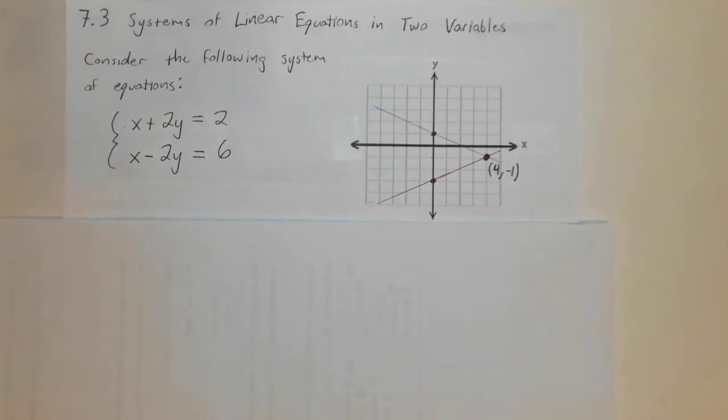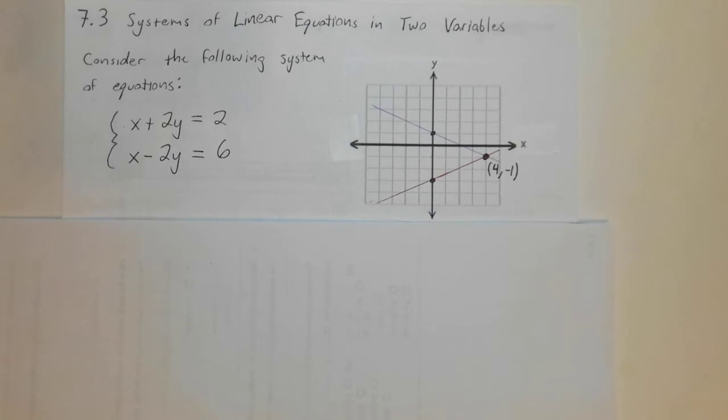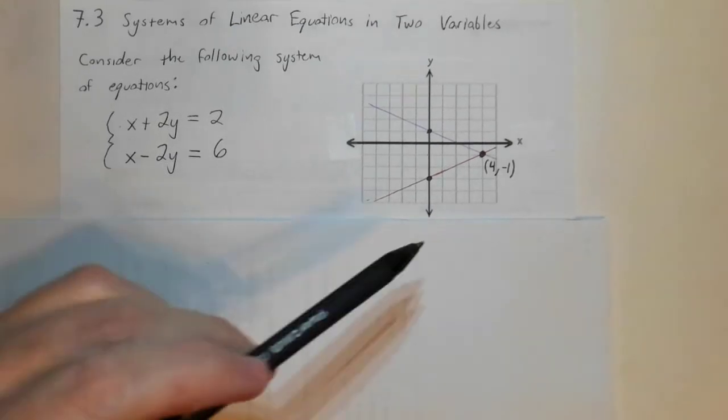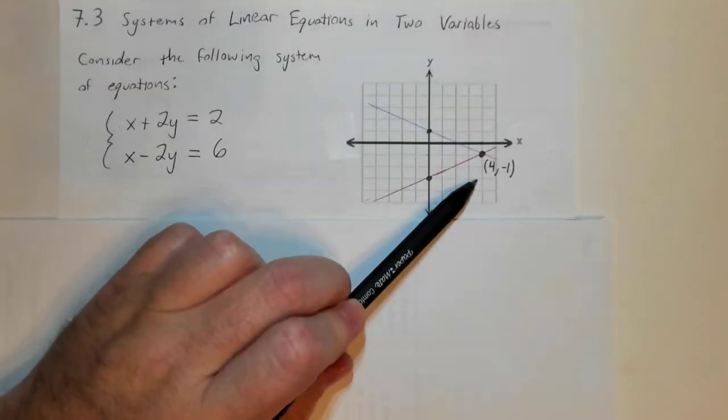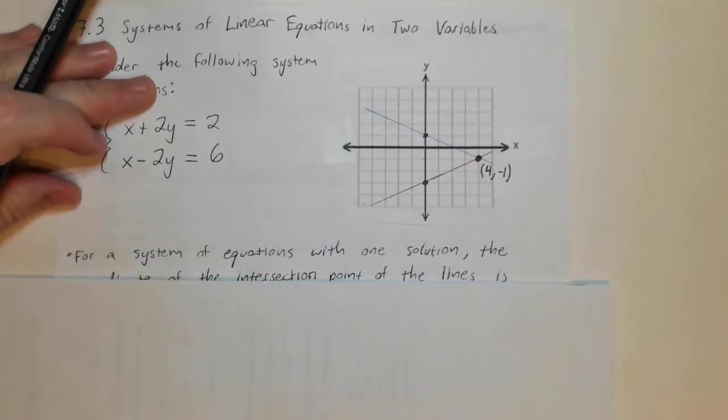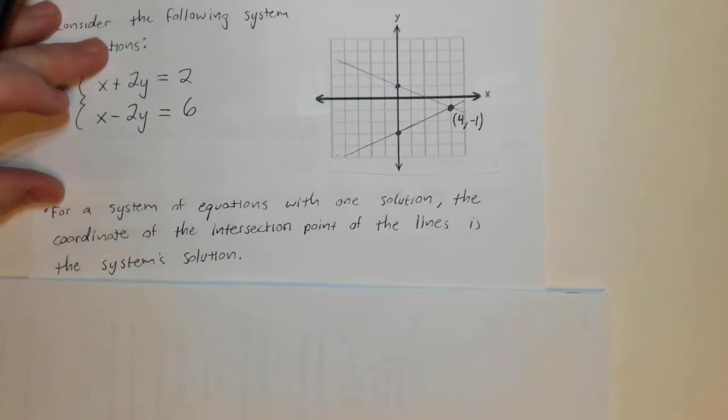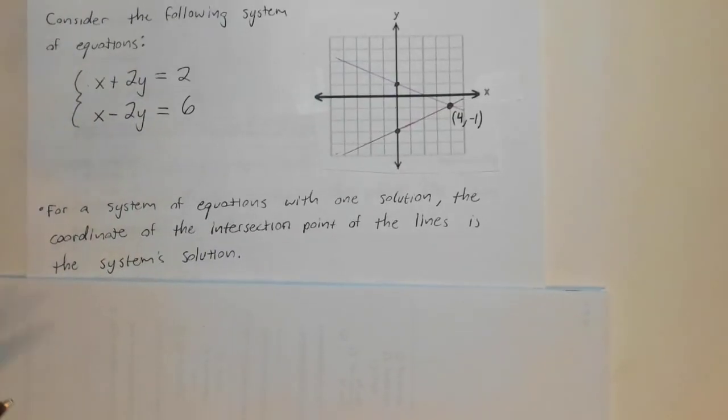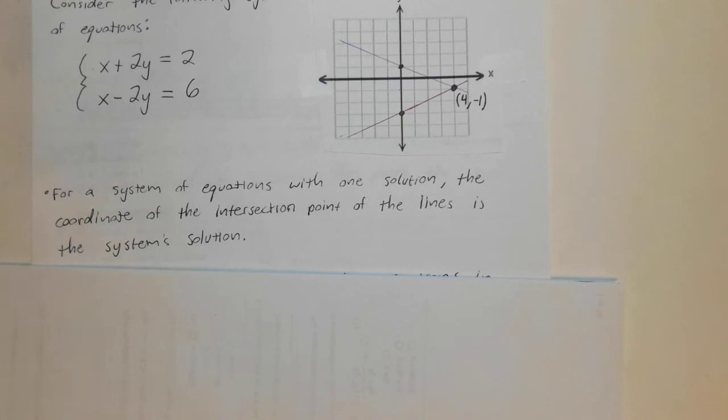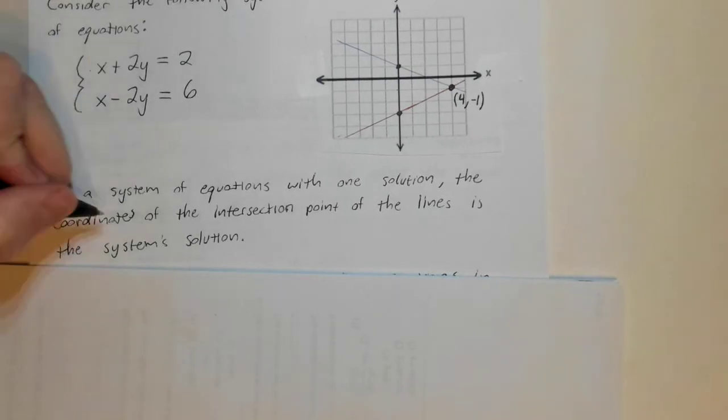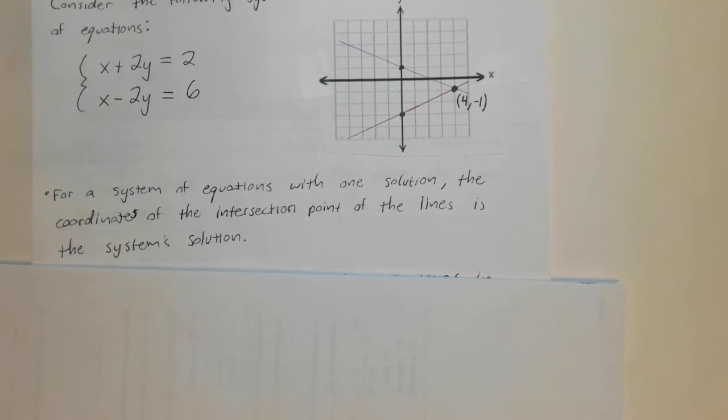And so when we talk about solving a system of linear equations, we're really talking about the point where the two lines intersect. And so before we start, we'll have a couple of things we need to mention about it. So for a system of equations with one solution, which is what we're discussing, the coordinates of the intersection point of the lines is the solution.